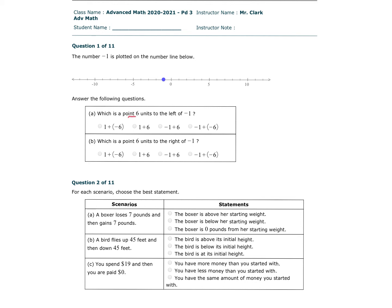Which is a point 6 units to the left of negative 1? So I'm subtracting 6: 1, 2, 3, 4, 5, 6. So negative 1 minus 6 or plus negative 6 would be this. Which is a point 6 units to the right of negative 1? So now I'm adding 6 to positive 5. Doesn't ask for an answer, just ask for how to do it.